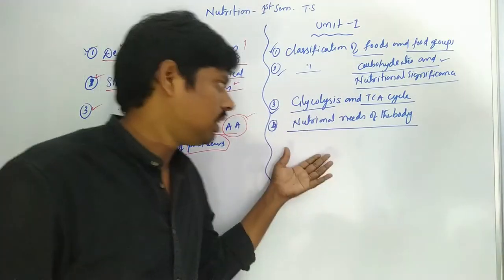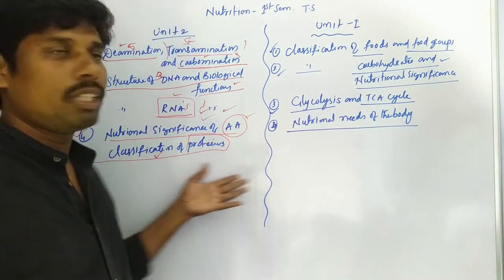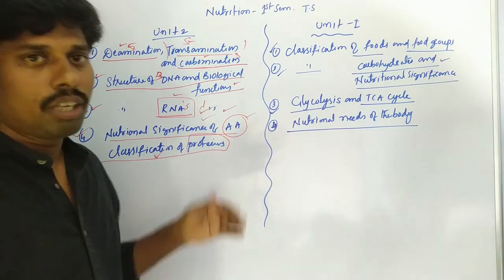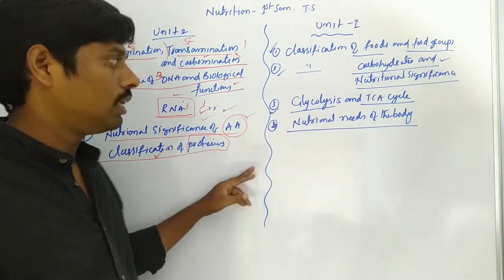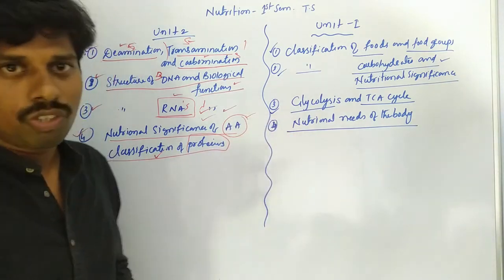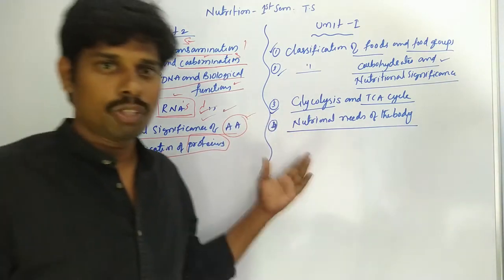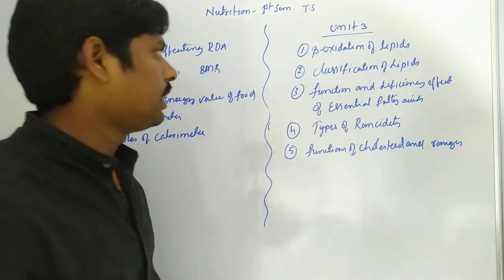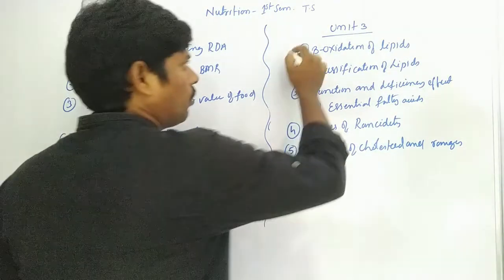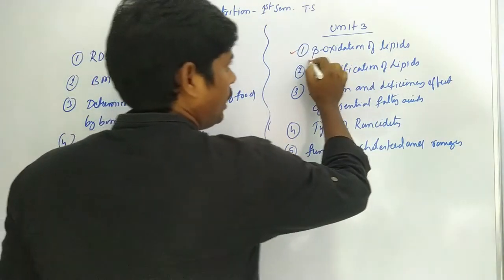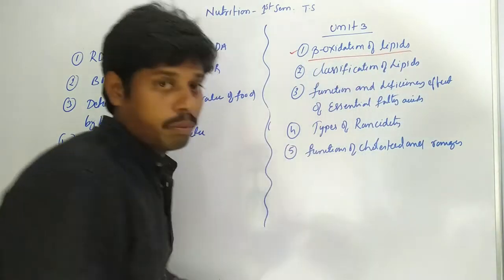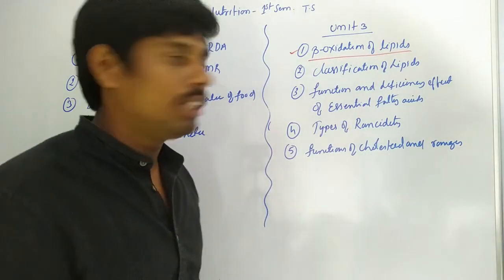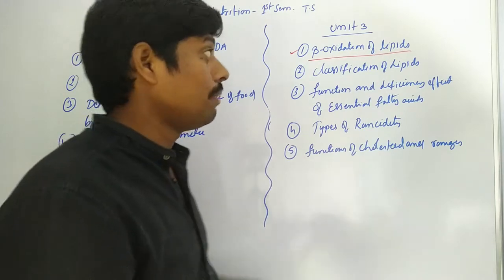From number nine you need to pick up four questions and five. The remaining two units may have important questions. Coming to the next unit, we observe three questions. The first question is the oxidation of lipids — very, very important — especially the palmitic acid.